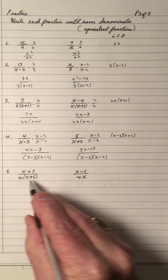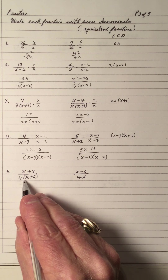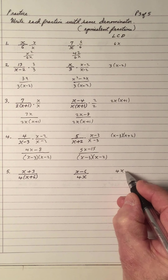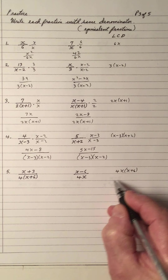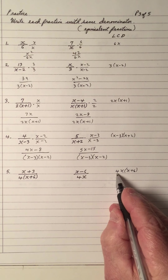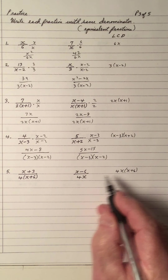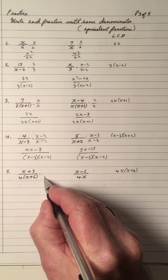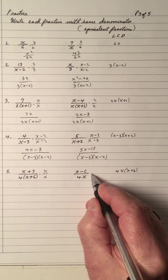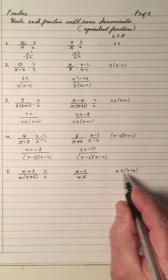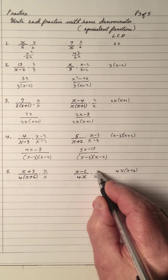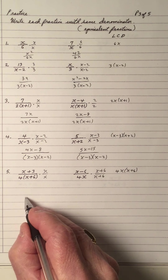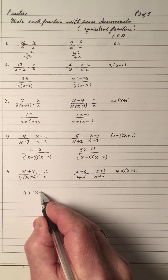The LCD: I have a 4, an x plus 6, and I have 4x. So I need the 4, the x, and the x plus 6 — because 4 and x plus 6 are right there, and 4x is right there. What do I need extra? I need the x, top and bottom. What do I need extra for the other? Multiply by 4x to give you 4x times x plus 6. Write the same denominator twice: 4x times x plus 6.